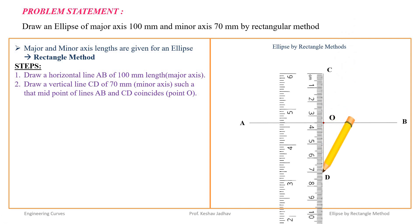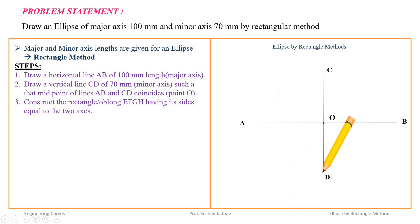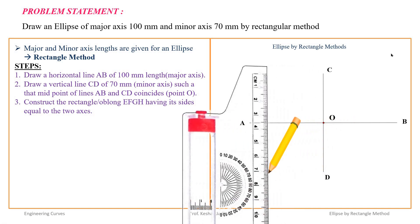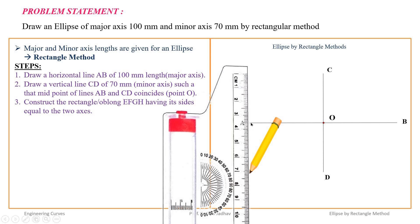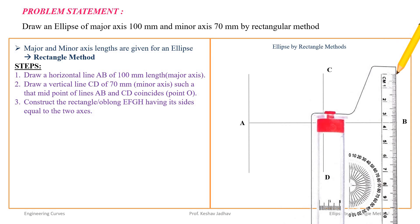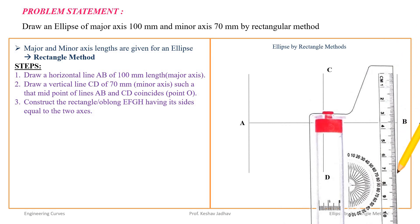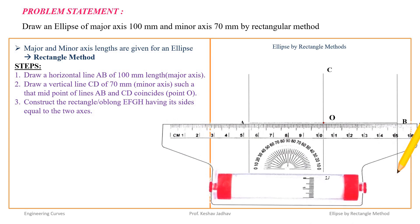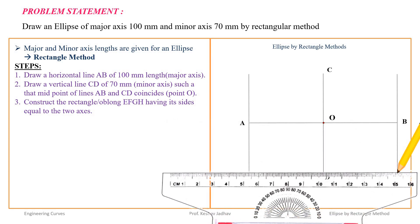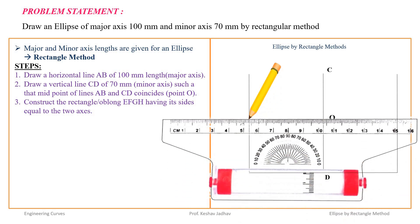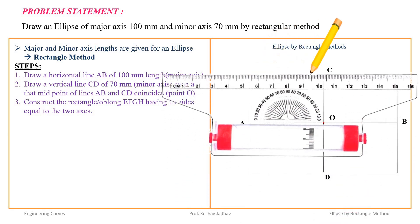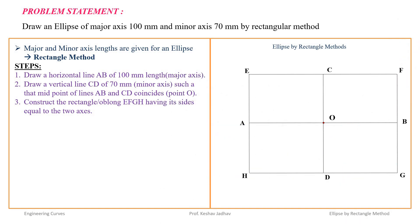Then we complete rectangle EFGH. We can draw a line parallel to CD from end A, and similarly from end B we can draw a vertical line. Then draw parallel lines from D and from C. Name the rectangle EFGH. So here we have drawn a rectangle of major axis 100 mm and minor axis 70 mm.